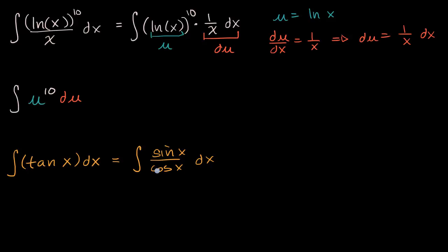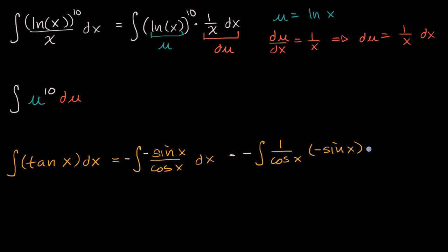More interestingly, the derivative of cosine of x is negative sine of x. We don't have a negative sine of x, but we can do a little engineering — multiply by negative one twice. We put one negative outside the integral and one inside, so that the inside expression becomes the derivative of cosine of x. This gives us the negative integral of one over cosine of x times negative sine of x dx.